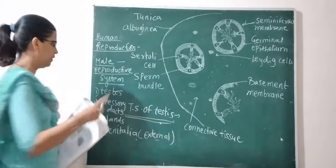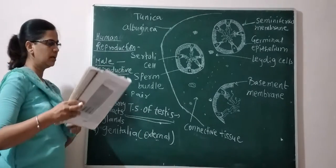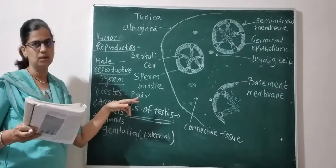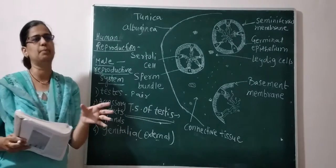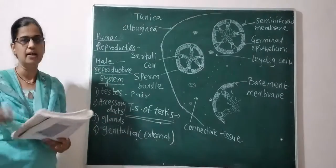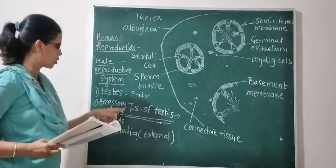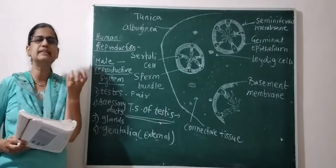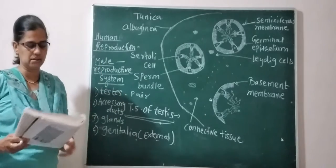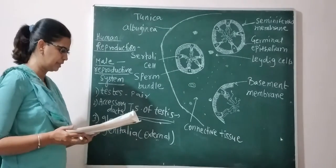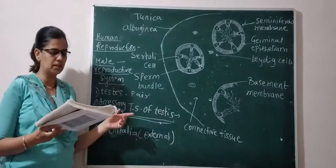There is a pair of testes. The testes are of mesodermal origin. They are located in the lower abdominal cavity region, specifically in the pouch called the scrotum — like a sack. In the fetal stage, the testes are up in the abdominal cavity, and later they descend into the scrotal sack during development.